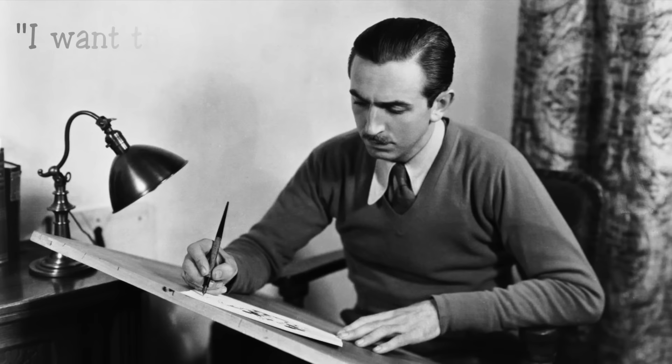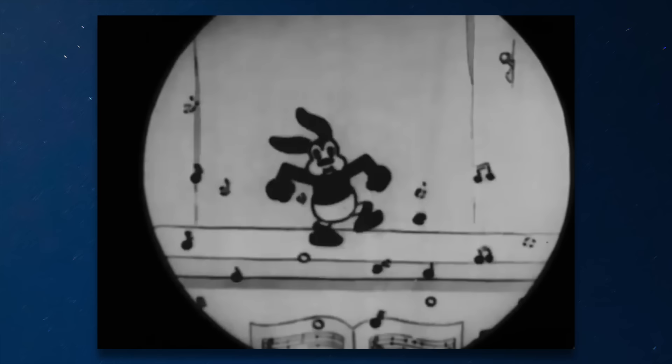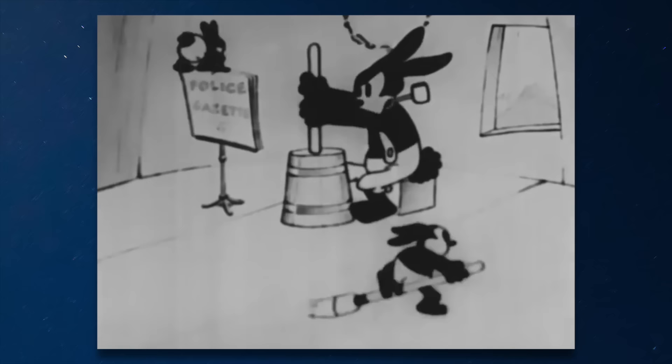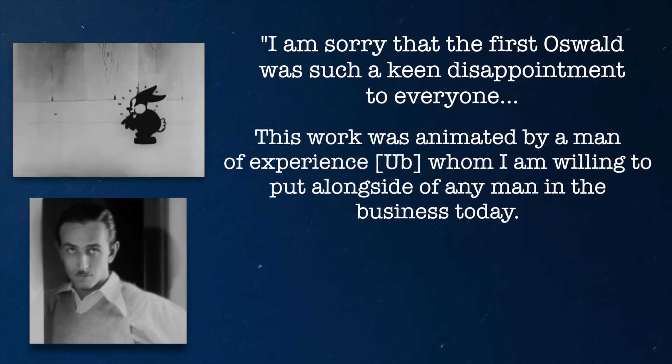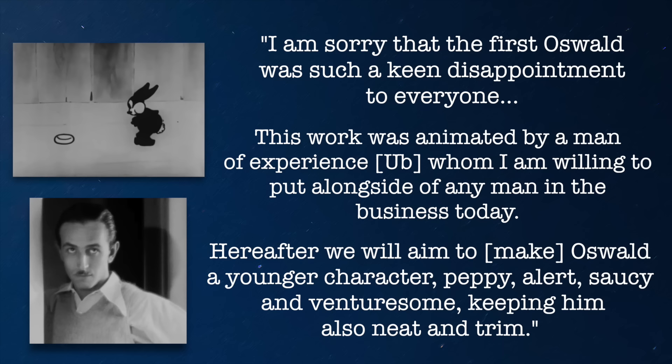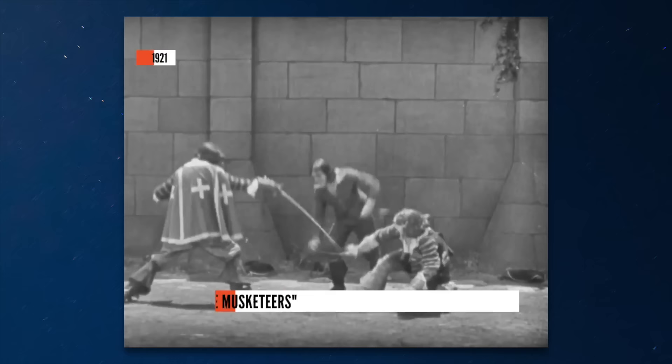Disney is quoted saying: 'I want the characters to be somebody. I don't want them just to be a drawing.' Even with this grand vision, the first Oswald skit, titled Poor Papa, ended up being a flop. He was older, grumpier, sloppier — the Universal executives were not impressed. Walt apologized profusely, saying: 'I'm sorry the first Oswald was such a keen disappointment. Hereafter, we'll aim to make Oswald a younger character — peppy, alert, saucy, and venturesome, keeping him neat and trim.' He went through a redesign, and his new personality was inspired by Douglas Fairbanks, a famous actor known for his courageous and adventurous attitude. Only Oswald didn't have as much follow-through — he could talk the talk, but not walk the walk, which would often be a point of comedy.